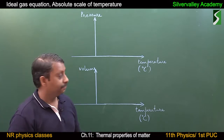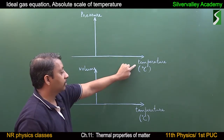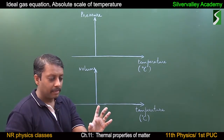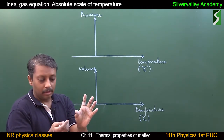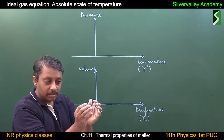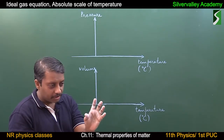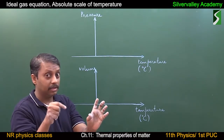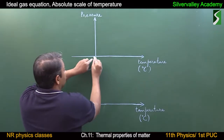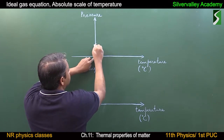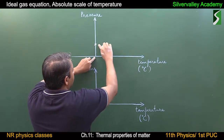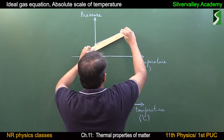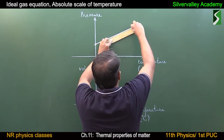For an ideal gas, consider a graph of pressure versus temperature. At 0 degrees Celsius, the gas will occupy some volume and have some pressure. With the increase in temperature, pressure also increases linearly — just like in a pressure cooker where temperature increases and pressure increases.